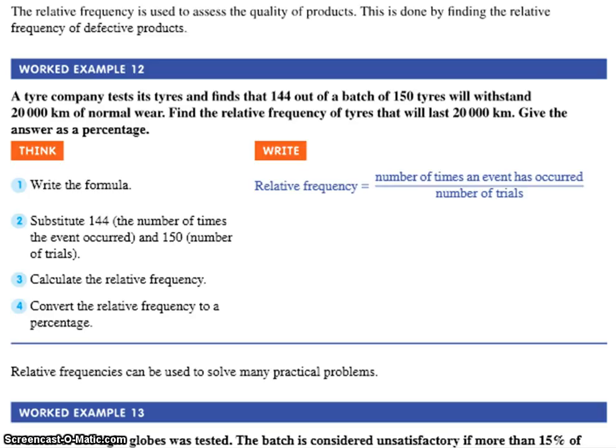What have we got to find? We've got to find the number of times the event has occurred. Which one's that? 144. And the number of trials? 150.